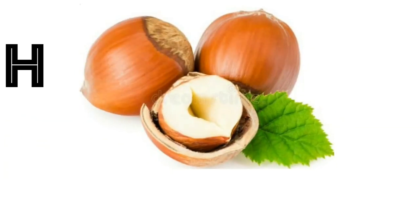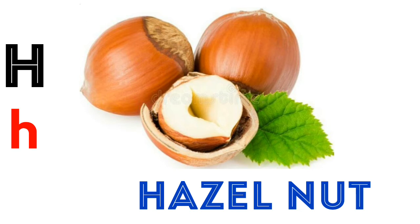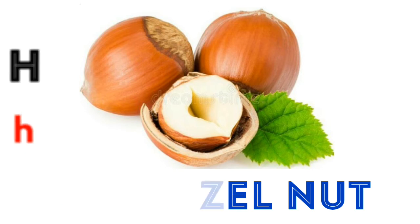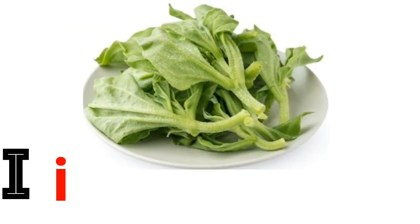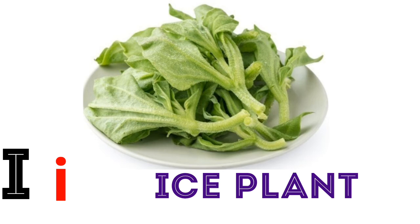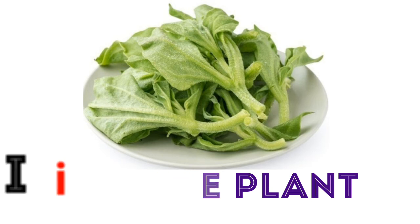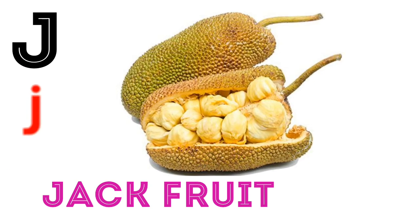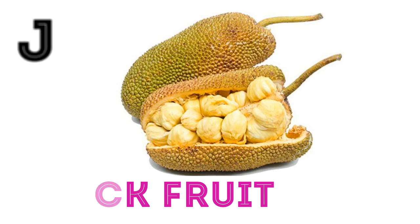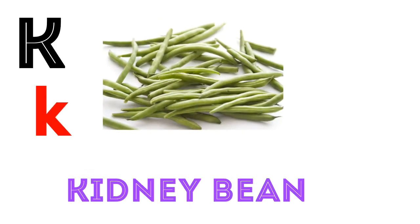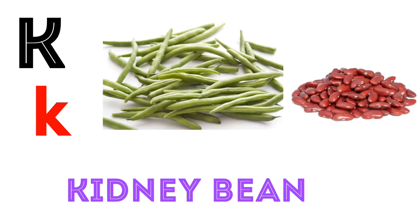H. H for hazelnut. I. I for ice plant. J. J for jackfruit. K. K for kidney bean.